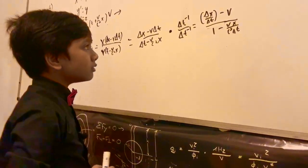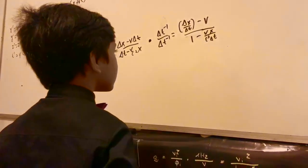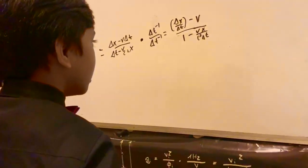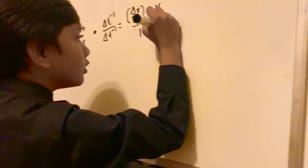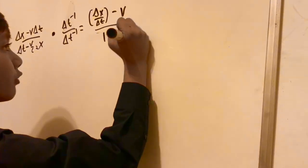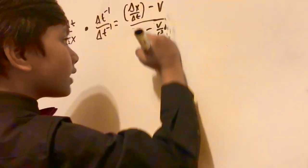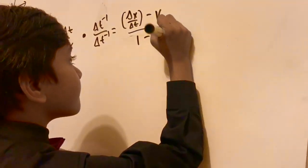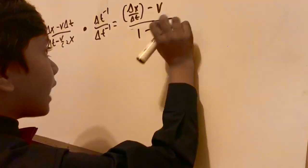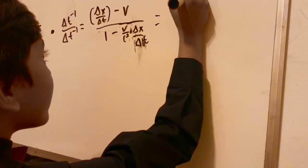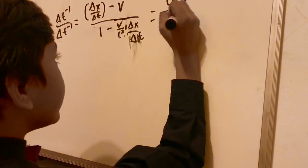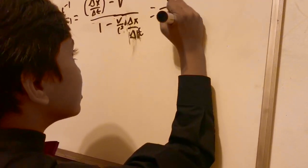So now, if you noticed, if you look closely, you can actually split this up into v over c squared times delta x over delta t, which adds up to u, ultimately. So we have u minus v over 1 minus uv over c squared.